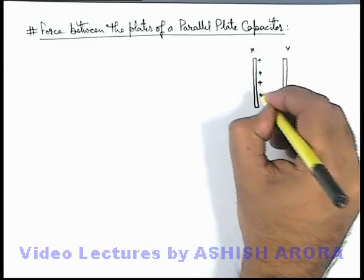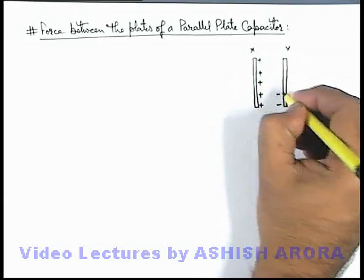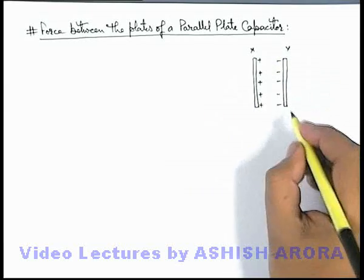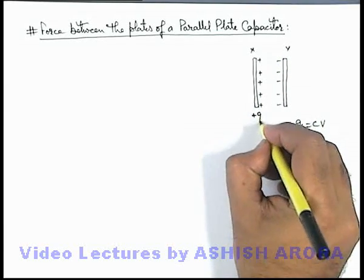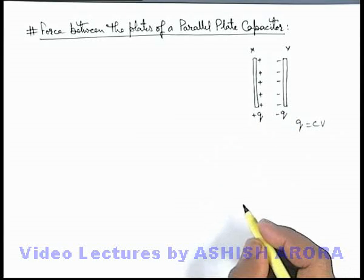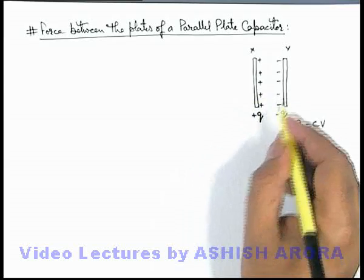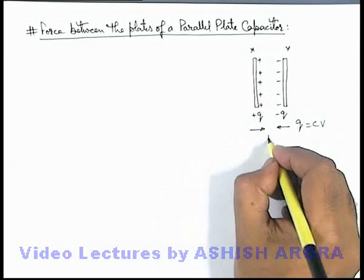This we already discussed in the amount of charge on capacitor plate in final stage we write as C times V. One plate carries a charge plus q, other carries a charge minus q. As obviously the two plates carry opposite charges, they'll attract each other with some attractive force F.